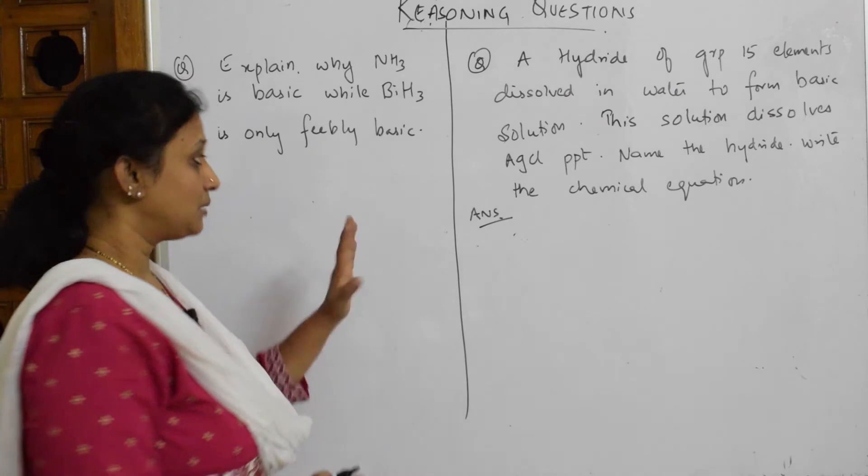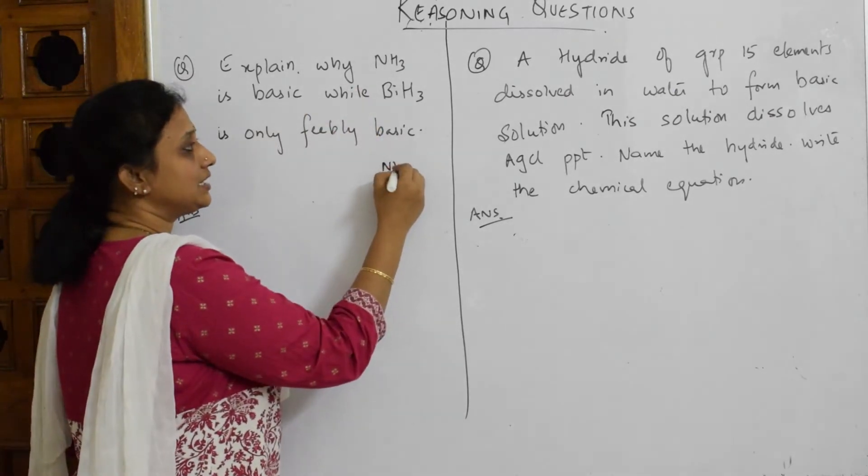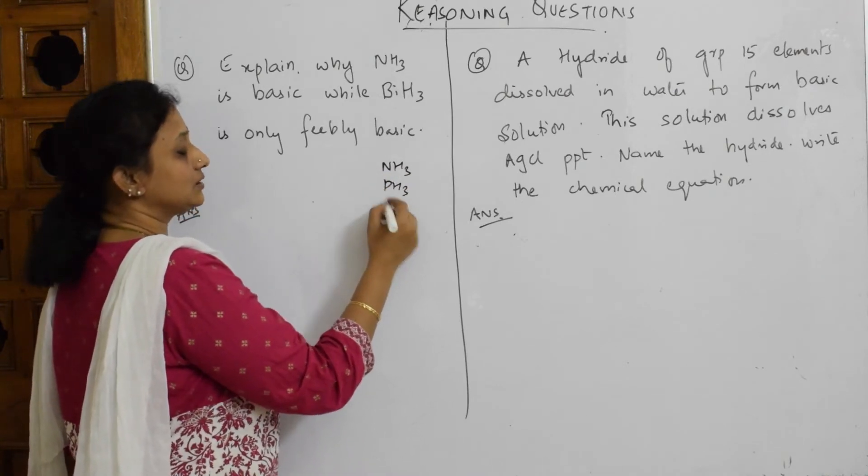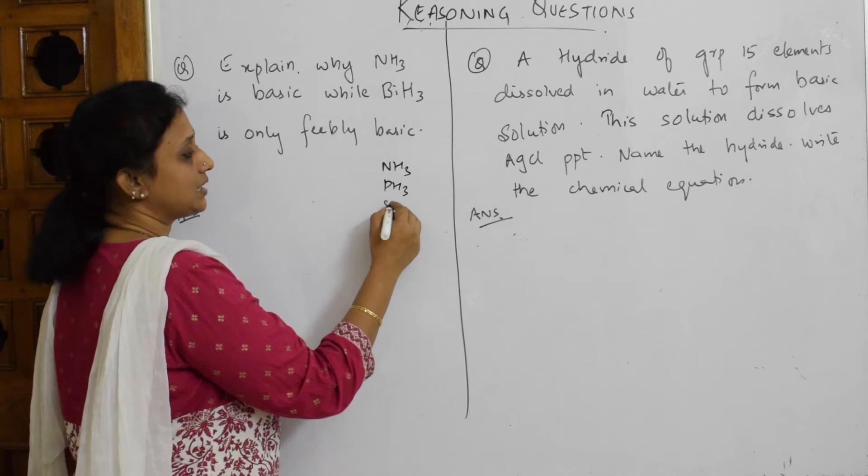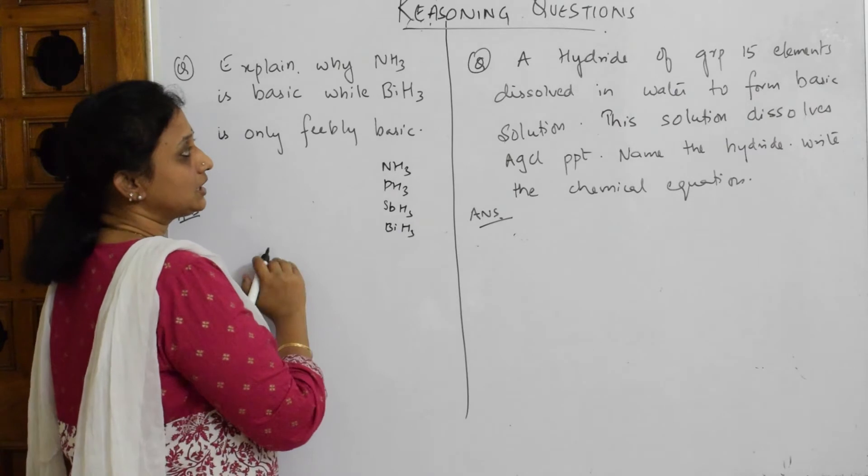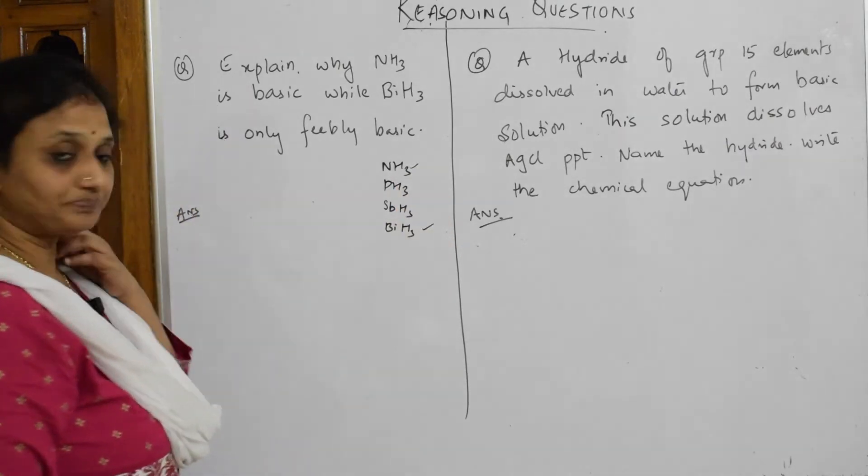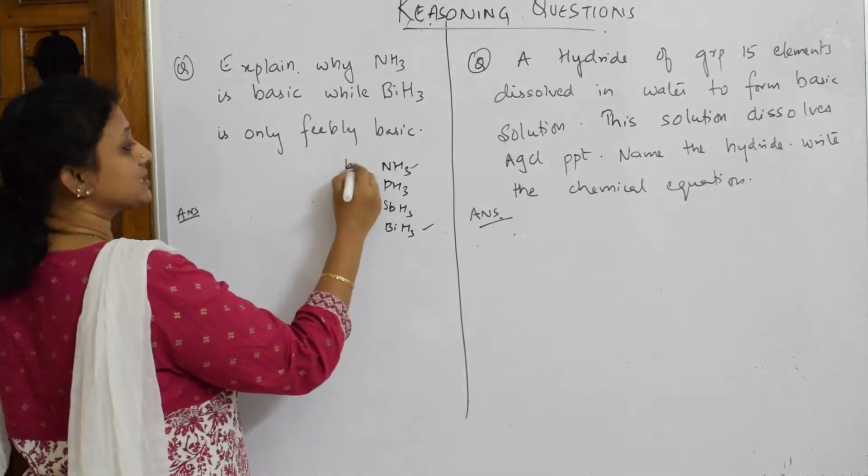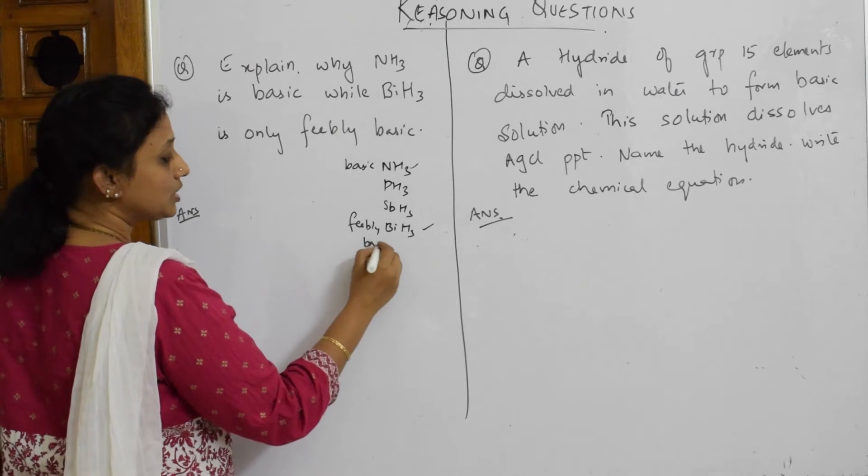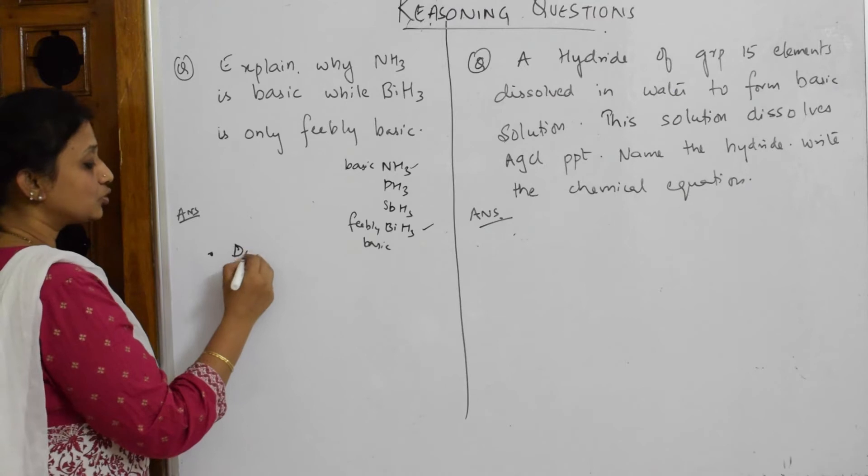Most important: how do you explain its basic nature? In NH3, nitrogen, like phosphorus, antimony, bismuth. They have compared this one with this one. This is basic and this is feebly basic. Let's prove it. For something to prove its basicity, the first important keyword is: down the group, what will increase?